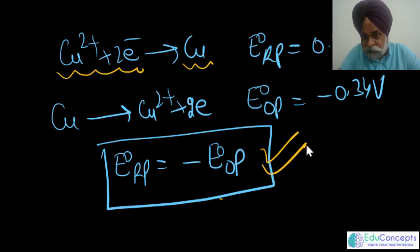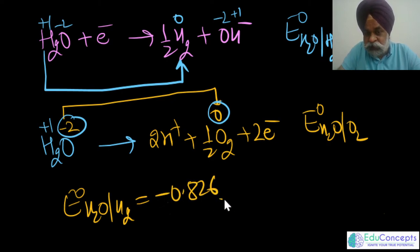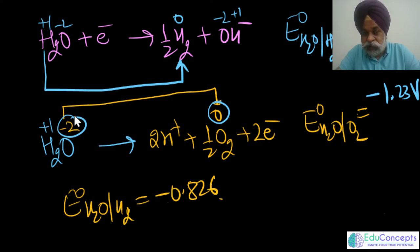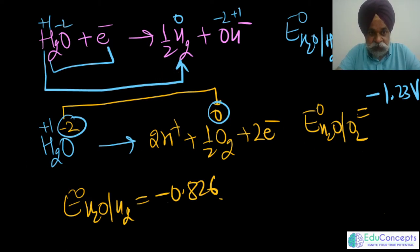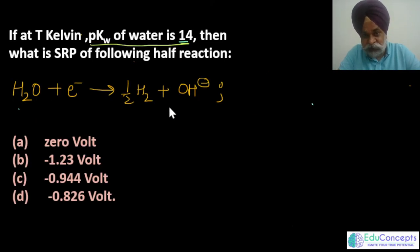This is NOT valid for water, because when you swap the oxidation and reduction half-reactions of water, the reactants and products are not the same entities. The reduction potential of water is −0.826 V, while the oxidation potential of water is −1.23 V. They are not negatives of each other. This is a very important distinction people often miss. So option D — that pKw and pKa are unequal — is the correct answer for question two.